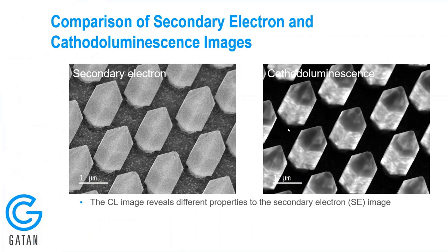The most rudimentary CL experiment is a CL intensity mapping, where we scan the electron beam and at the same time acquire light images. We're looking at, as a function of the excitation position, how much light is emitted from the sample. There's no wavelength information here — this is just a point detector responding to light striking it.